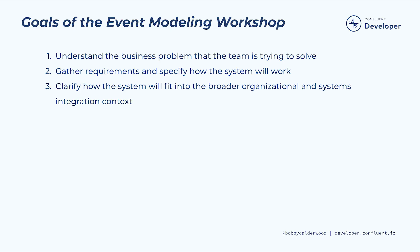The event modeling workshop has the following goals. One, understand the business problem that the team is trying to solve. Two, gather requirements and specify how the system will work. And three, clarify how the system will fit into the broader organizational and systems integration context. Careful preparation by the workshop's facilitator can ensure that the workshop achieves these objectives and maximizes the value of the participant's time.